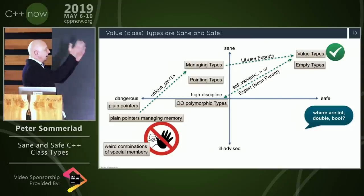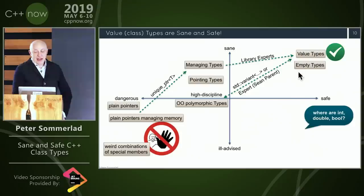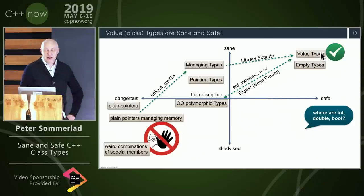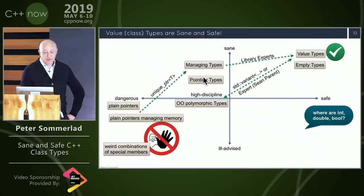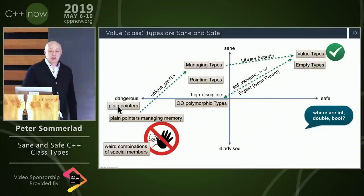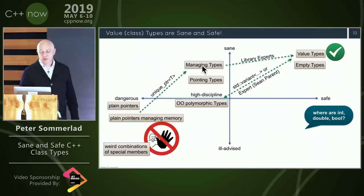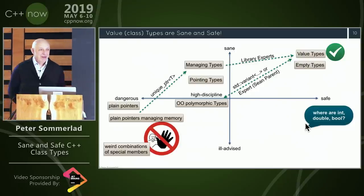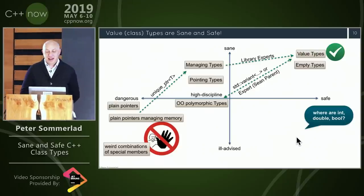Going back to our landscape of sane/safe versus ill-advised/dangerous, value types go in the safe corner. The other types — managing types, pointing types, potentially dangling types, and polymorphic types — fall elsewhere. Plain pointers: don't use them anymore. Owning plain pointers should be refactored to unique pointer, which is a managing type that cannot dangle. Where do int, double, and bool fall on that map?